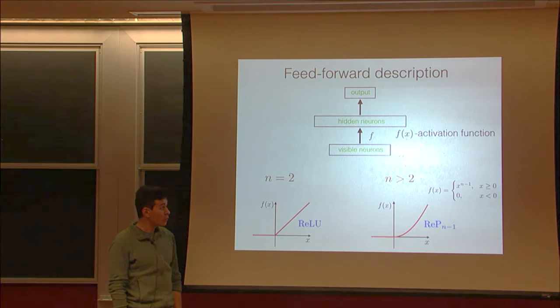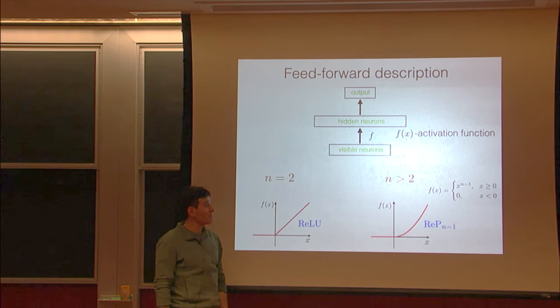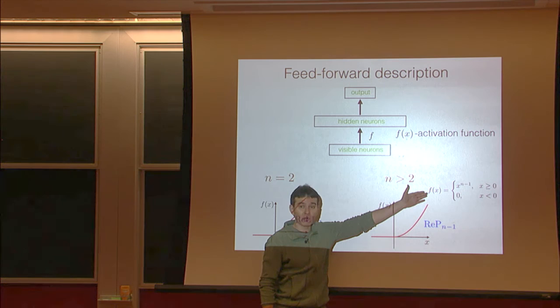In the dual description, these networks correspond to feed-forward neural nets with unusual activation functions, which transmit the activities of the visible neurons into the hidden layer. For the associative memory with energy function of power n, the corresponding activation function is a rectified polynomial of power n minus 1.